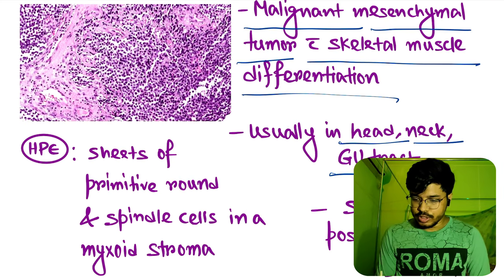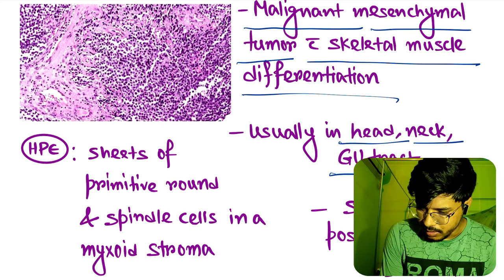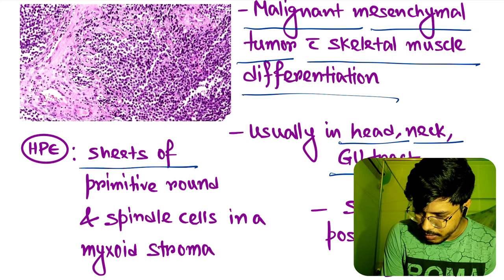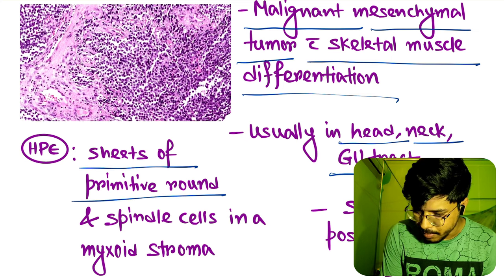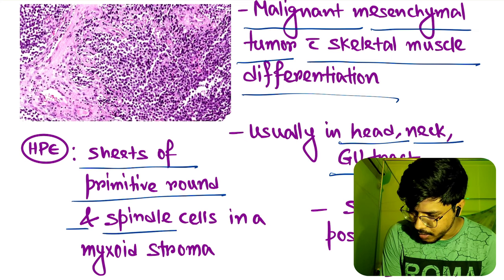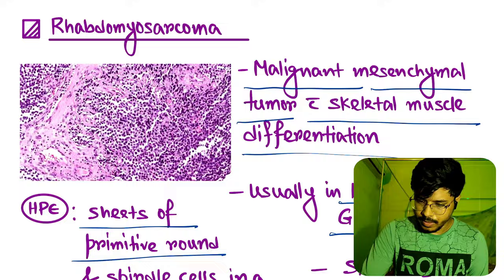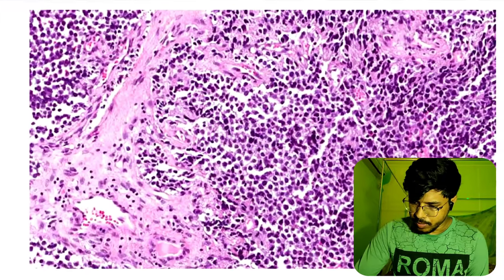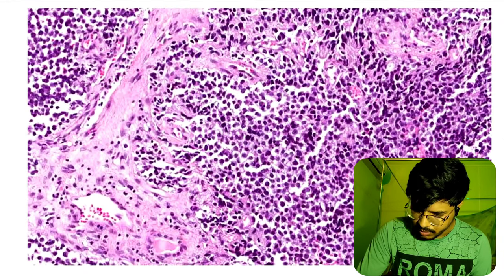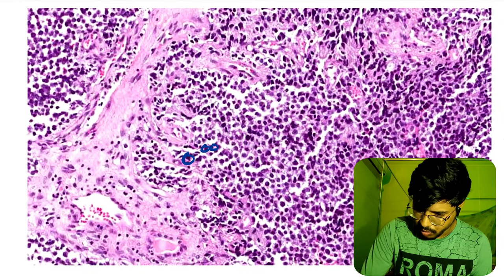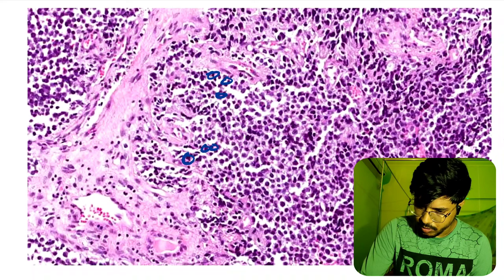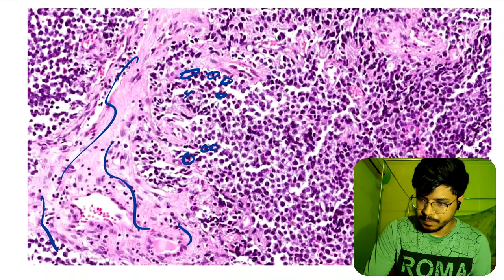Now in histopathology, there are seeds of primitive round and spindle cells in a myxoid stroma. These are the round cells and this is the stroma.